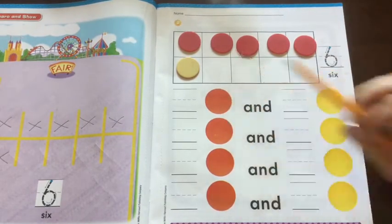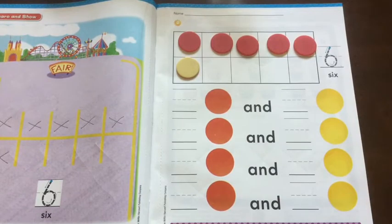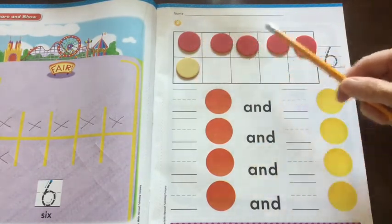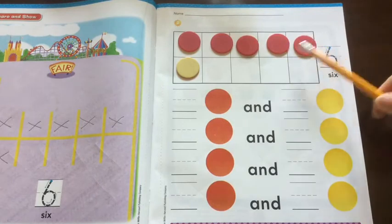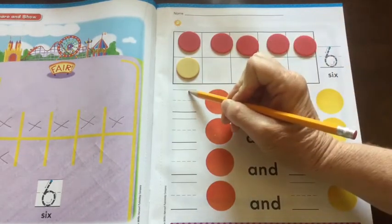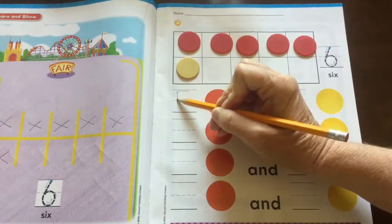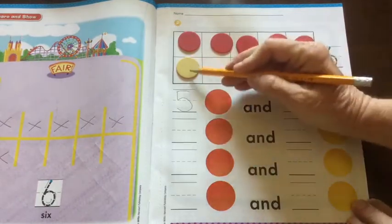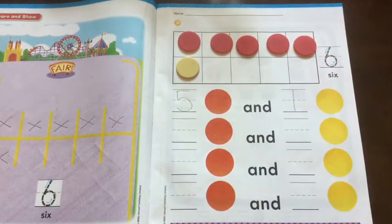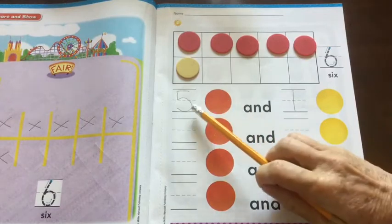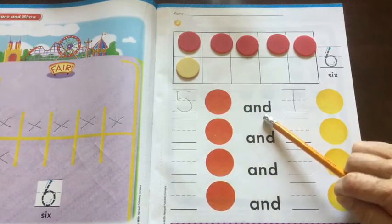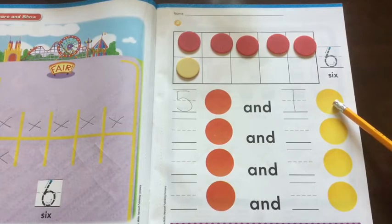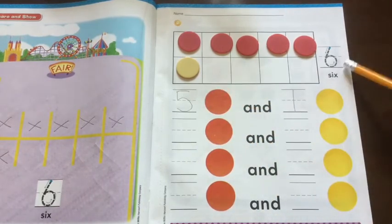How many red counters do I have in my 10 frame? Let's count them. 1, 2, 3, 4, 5. So over here I write 5. Across, down, and around. That's 5 that I found. So I have 5 red counters. How many yellow counters in my 10 frame? Just 1. So now I read it. 5 red and 1 yellow. What does 5 red and 1 yellow make? 6.